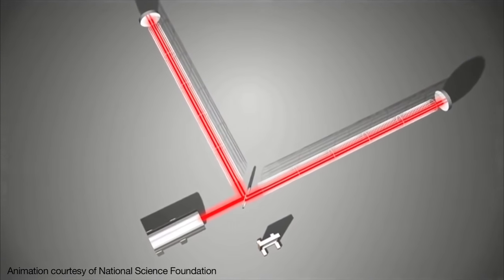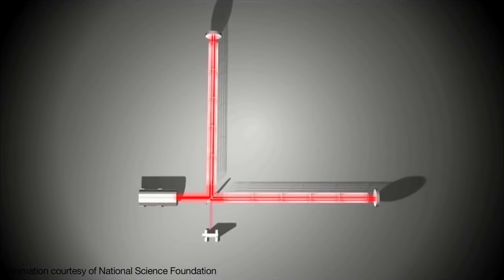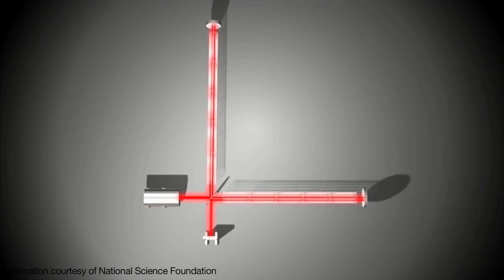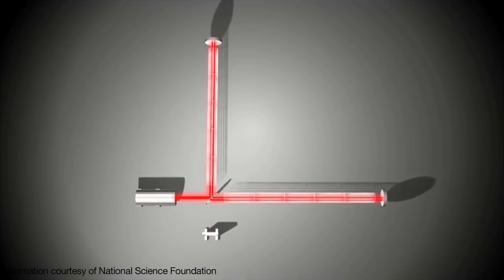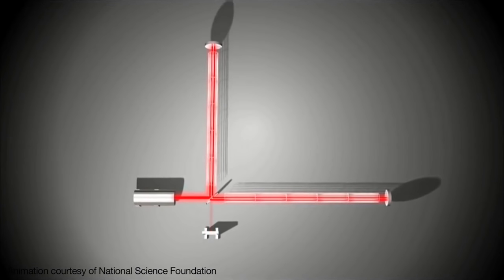When a gravitational wave passes through the interferometer, the distance along the arms of the interferometer are shortened and lengthened, causing the beams to become slightly out of sync. Hence, some light arrives at the photodetector, indicating a signal.